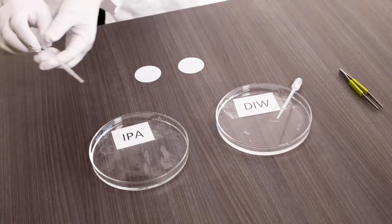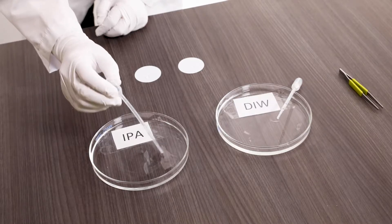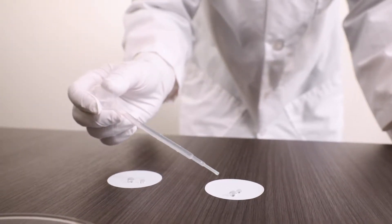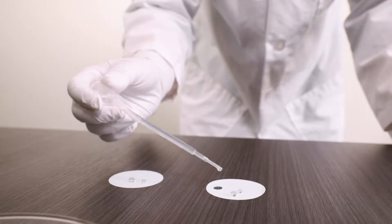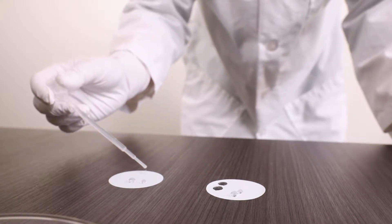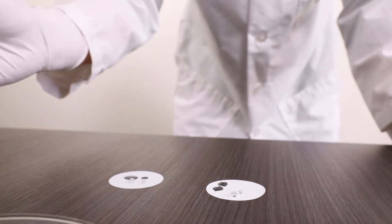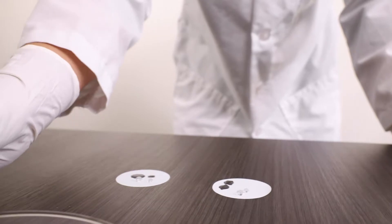If I put another drop of IPA on the membrane, you can see it's very easy the membrane gets wetted out by the IPA. So it tells us both membranes still have hydrophobic nature, but can be wetted out by IPA.